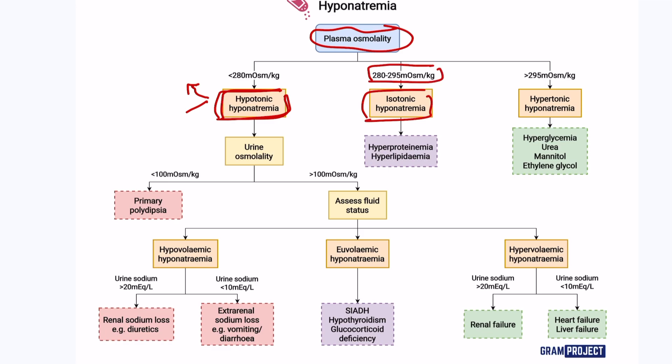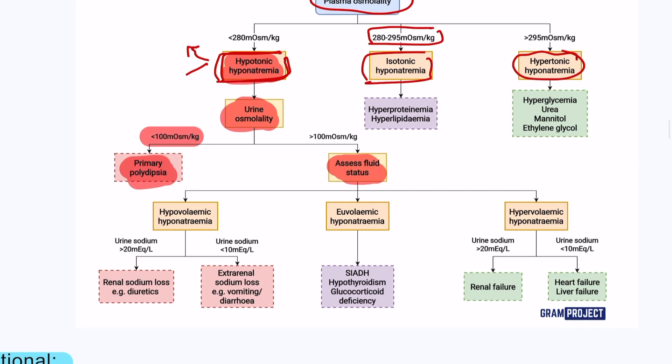Starting with hypotonic hyponatremia, you can do urine osmolarity to define the patient's fluid status. If urine osmolarity is less than 100, this is polydipsia due to excessive water intake. If urine osmolarity is more than 100, the body is trying to compensate, and it could be hypovolemic, euvolemic, or hypervolemic.